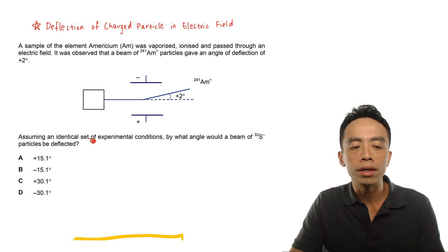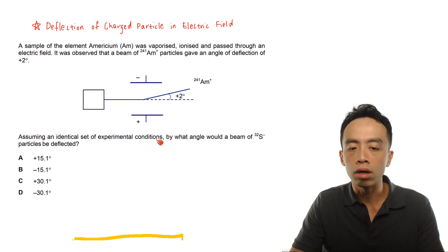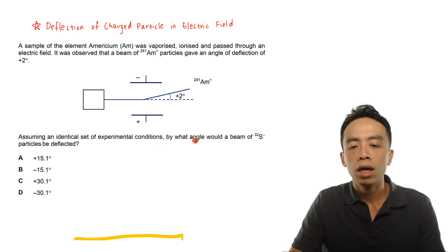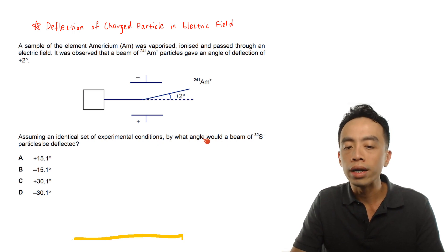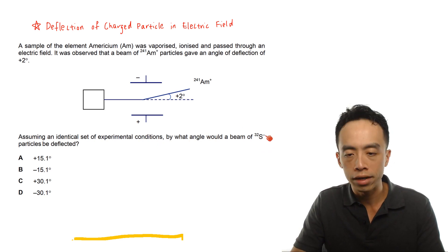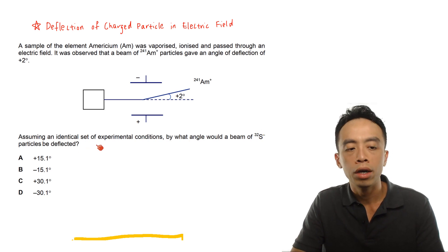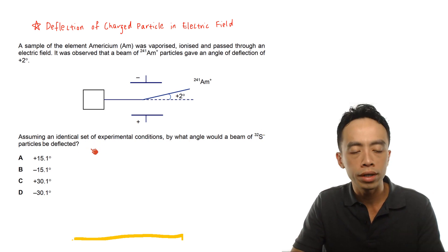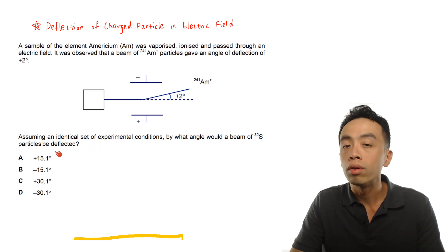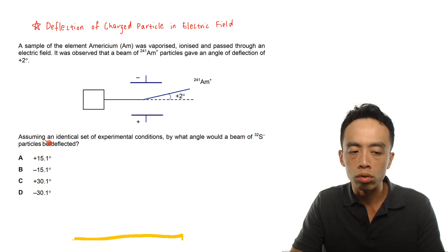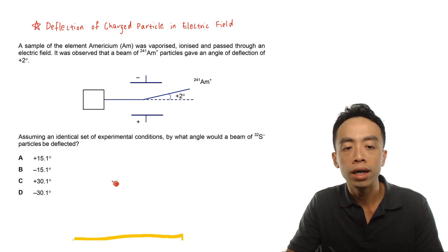Now, assuming an identical set of experimental conditions, by what angle will a beam of S minus (sulfur-32) particles be deflected? We have four options, and we will determine which is the answer.